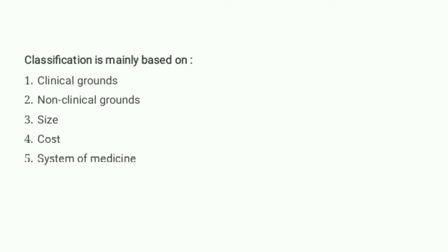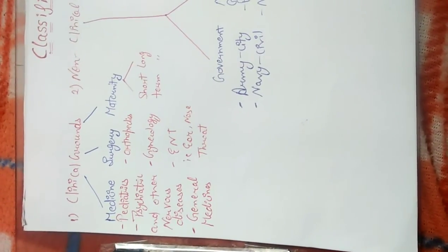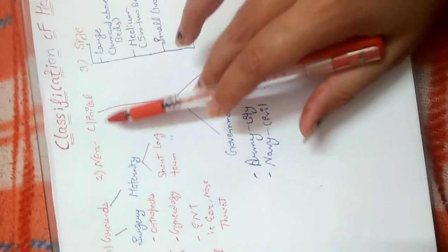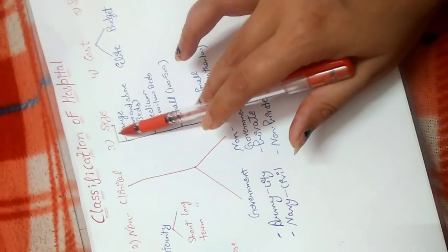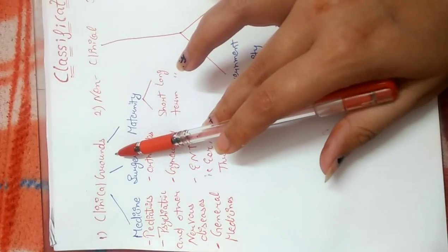Now I will tell you the classification of hospitals. I have made a chart so it will be easy to understand. Classification is done: first, on the basis of clinical grounds; second, on the basis of non-clinical grounds; third, on the basis of size; fourth, on the basis of cost; and fifth, on the basis of the system of medicines.